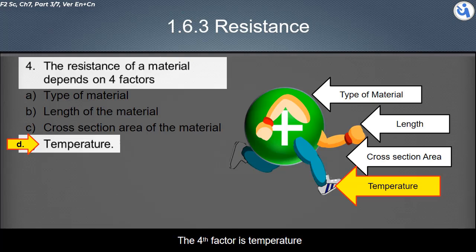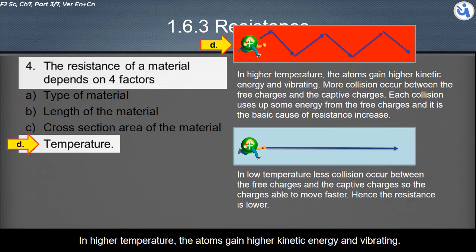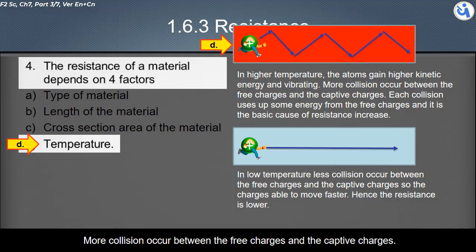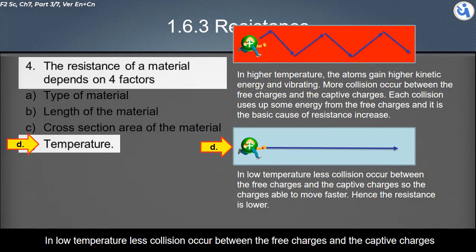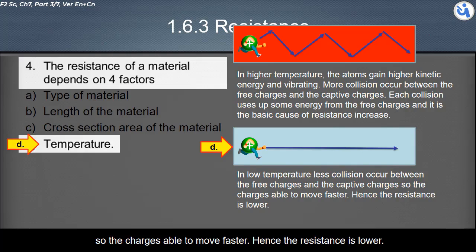The fourth factor is temperature. In higher temperature, the atoms gain higher kinetic energy and are vibrating. More collisions occur between the free charges and the captive charges. Each collision uses up some energy from the free charges, and this is the basic cause of resistance increase. In low temperature, less collision occurs, so the charge is able to move faster. Hence the resistance is lower.